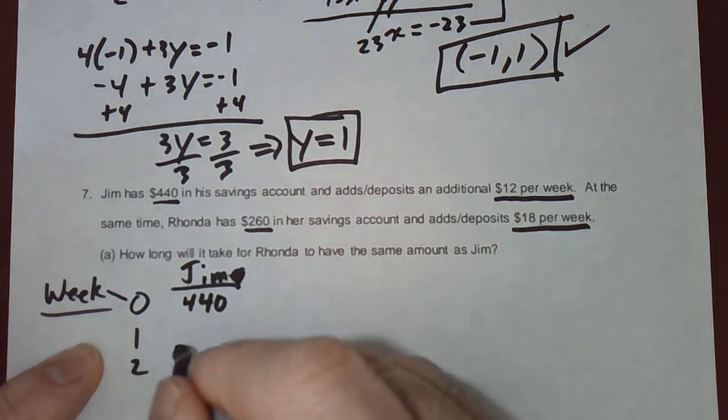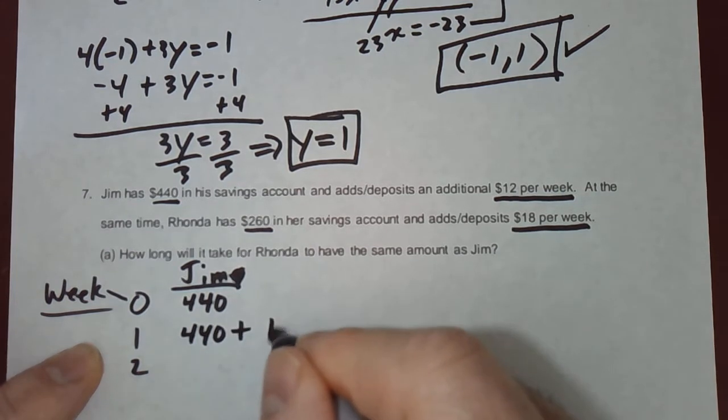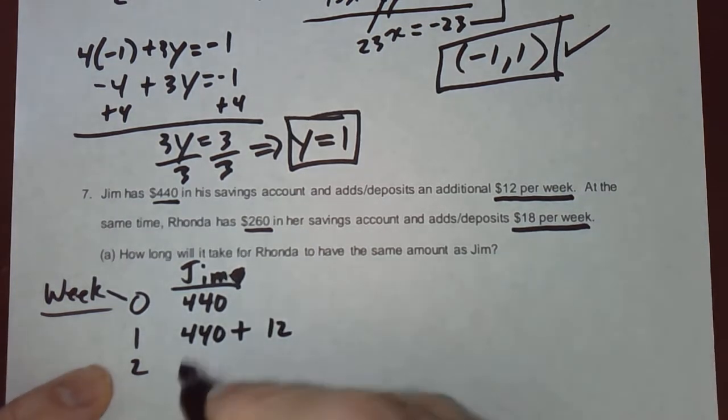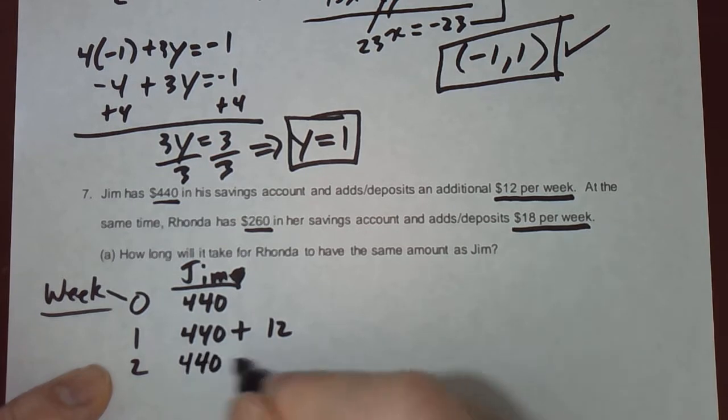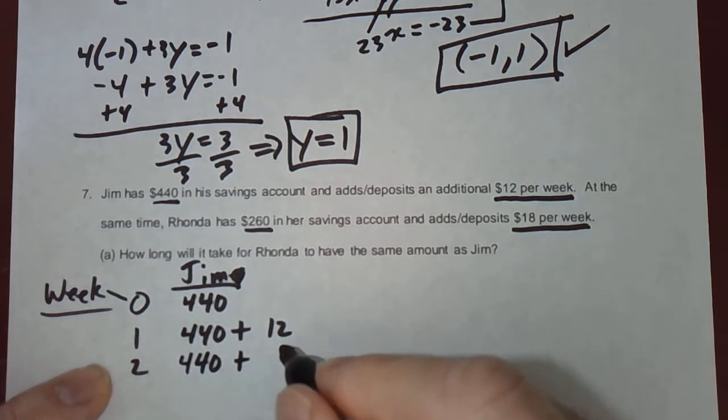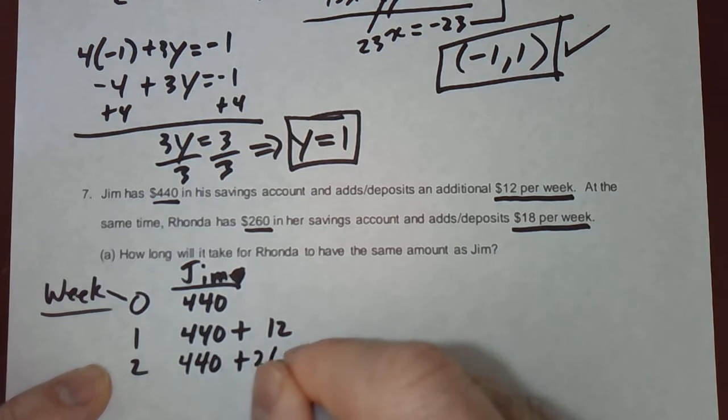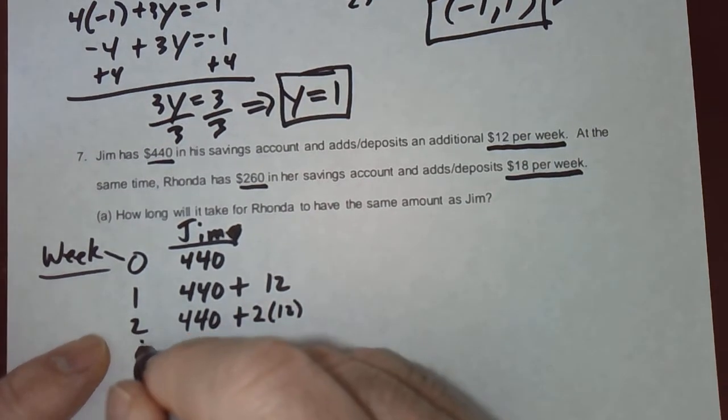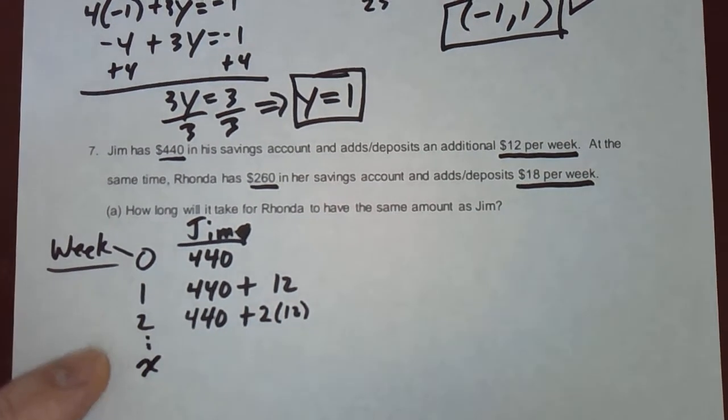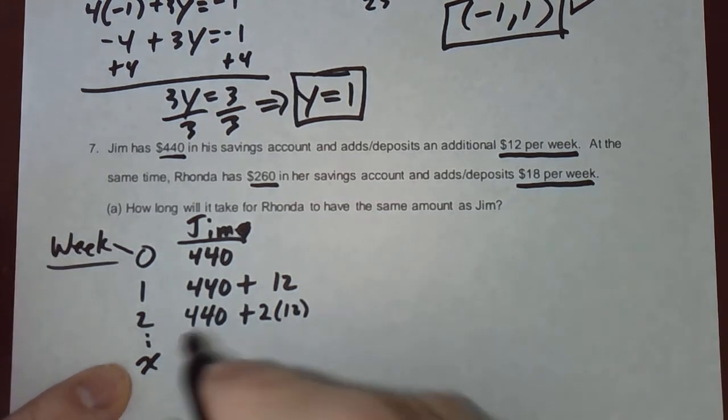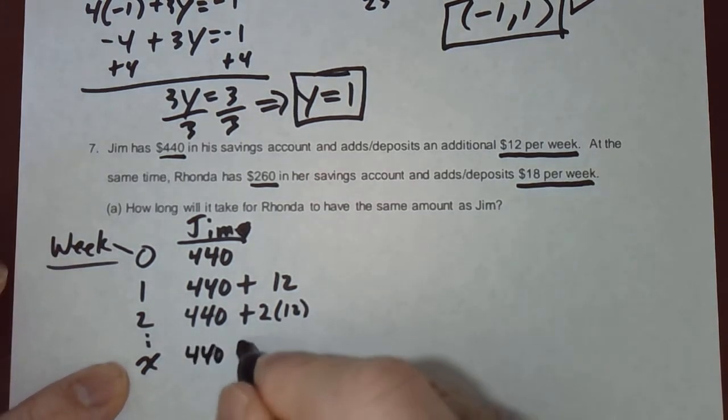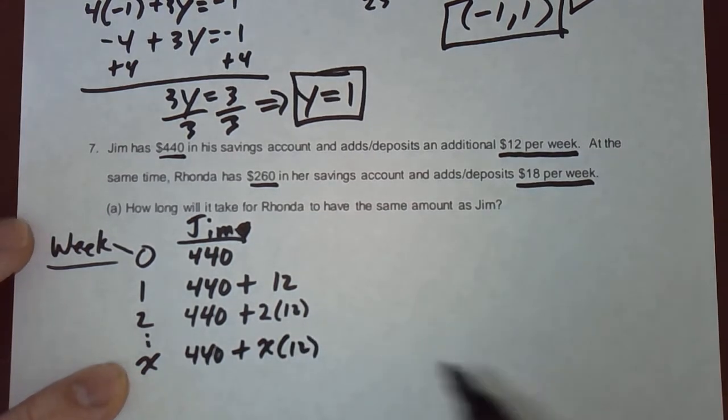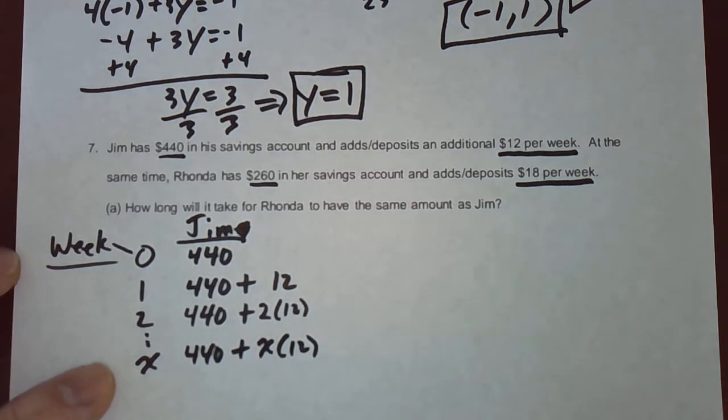How much does he have one week later? He adds 12, so it would be 440 plus 12. Week 2, he has 440 plus how much? Well, 2 times 12. Week 3, he has 440 plus 3 times 12. How much would he have on week X? X is going to be our week number. He'd have 440 plus X times 12. Maybe I should have written that as 12X. $12 times the number of weeks.